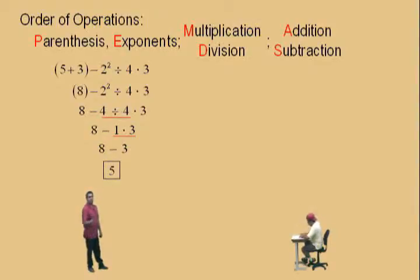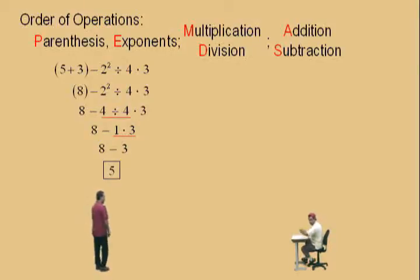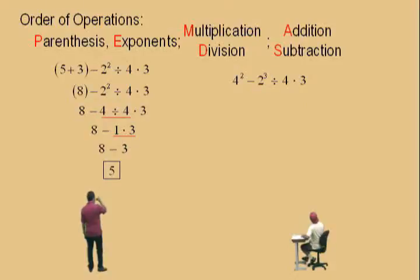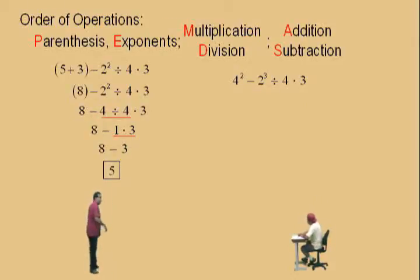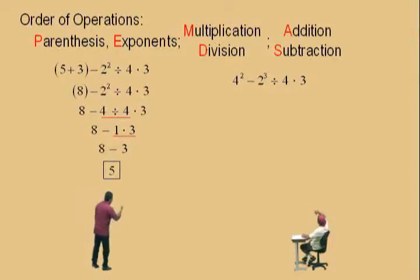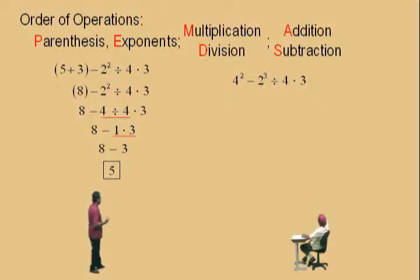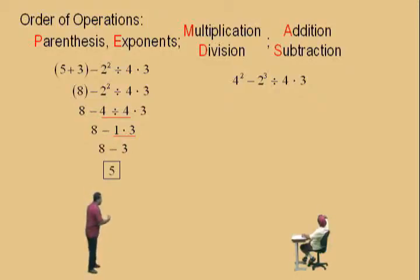That was a tough one, right? Let's do another tough one. Here we have 4 squared subtract 2 cubed divided by 4 times 3. But don't get scared. Charlie, do we have any parentheses? No, we don't. We have exponents. Yes, we do. So let's do our exponents first. Now what's 4 squared? Charlie, remember, 4 squared means 4 times 4. And so what is it? 16.